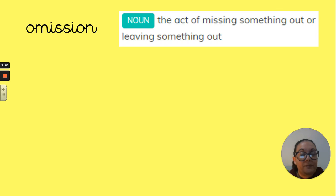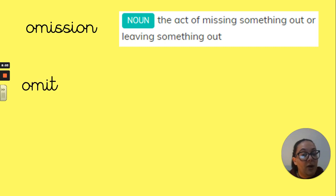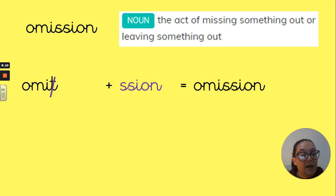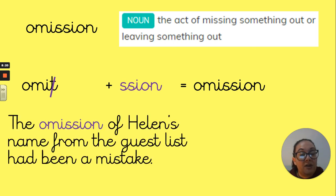We have the word 'omission'. The omission means the act of missing something out or leaving something out. Our root word is 'omit'. It has that 'mit' ending, so we're going to remove our 't' and add our 's-s-i-o-n' suffix, and that gives us the word 'omission'. In a sentence: 'The omission of Helen's name from the guest list had been a mistake' — it had been left out accidentally.